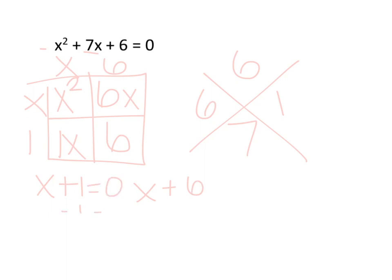So if we subtract 1, x will give us negative 1. Set this one equal to 0 and solve for x by subtracting 6, so x would give us negative 6. So our two answers would be x is equal to negative 1 and x is equal to negative 6.